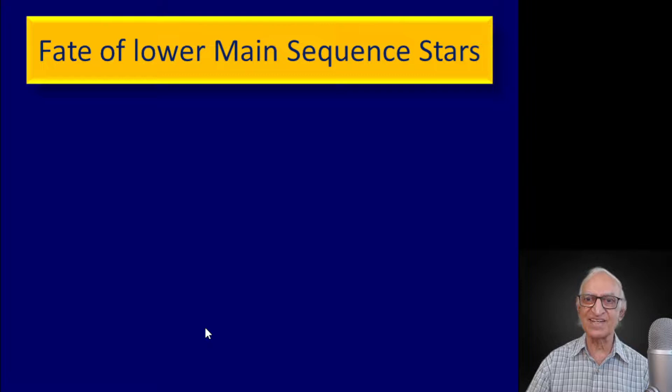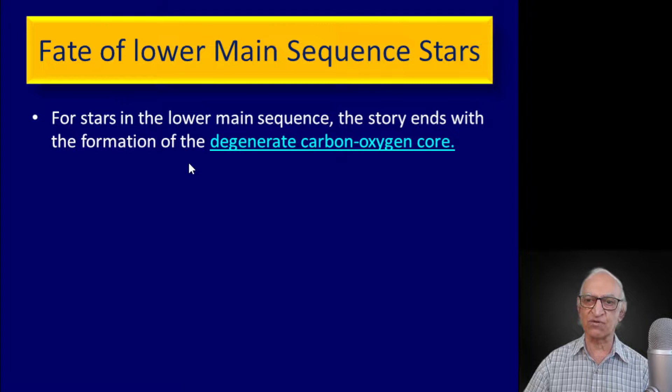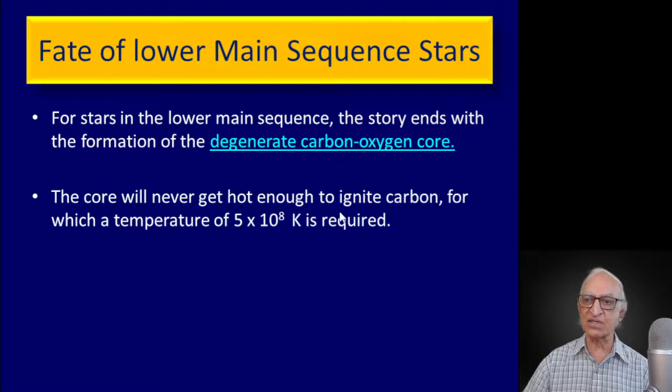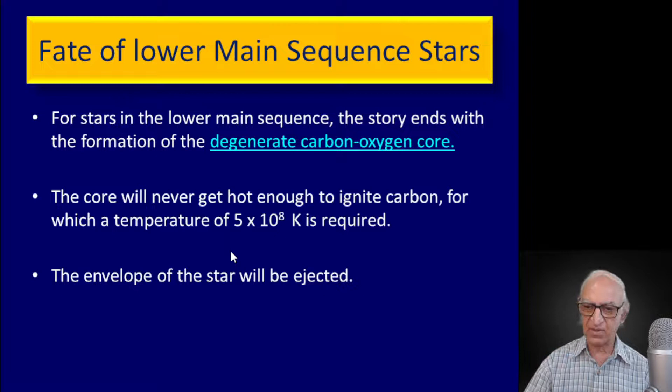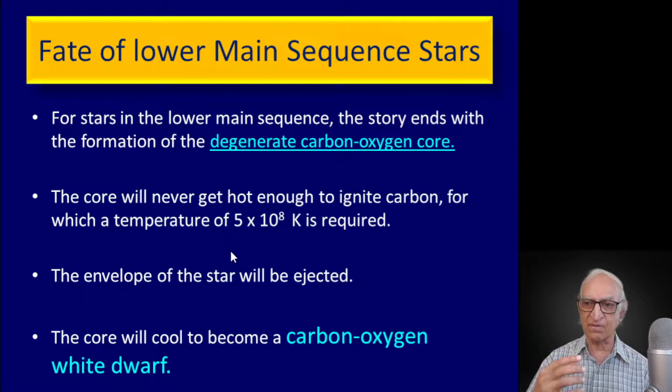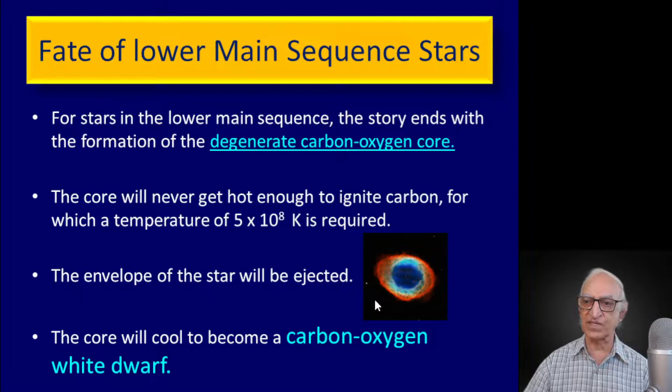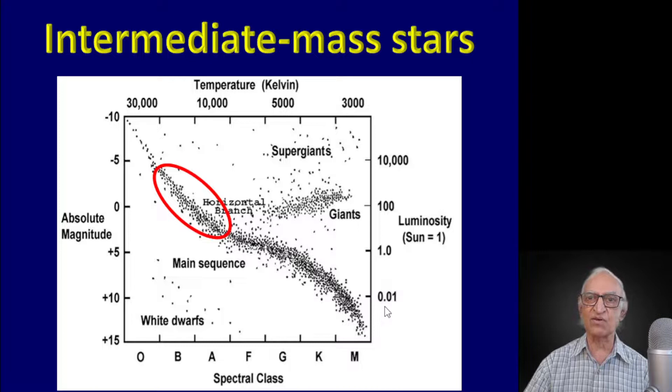To summarize: for stars in the lower main sequence, the story ends with the formation of the degenerate carbon-oxygen core. The core will never get hot enough to ignite carbon, for which a temperature of 500 million degrees is required. The envelope of the star is ejected and the core will eventually cool and become a carbon-oxygen white dwarf. The envelope which has been ejected expands into the interstellar medium — these objects are known as planetary nebulae.